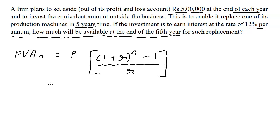This is a very simple question. So if you really want to be proper, future value of annuity for twelve percent and five years is equal to five lakhs.